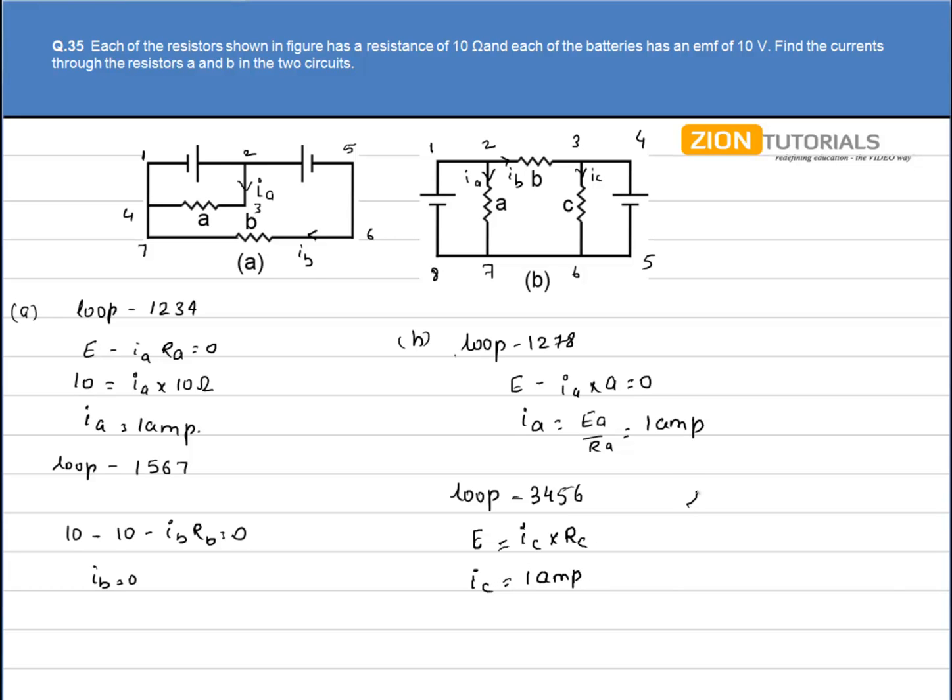Now applying Kirchhoff's law in loop 1-2-3-4-5-6-7-8, we have plus E minus E minus IB into RB equal to 0. So from here IB comes out to be 0. That is the answer.